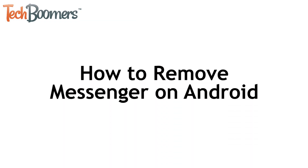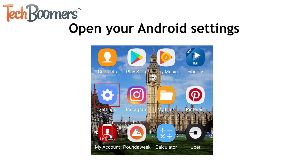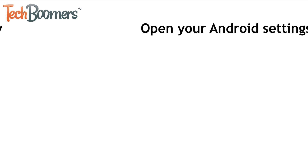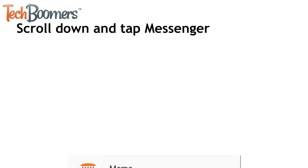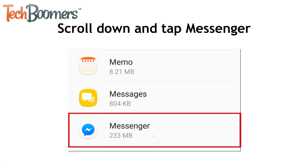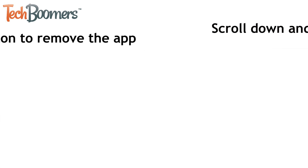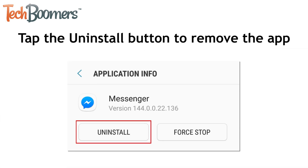Next, I'm going to show you how to remove Messenger from an Android device. Open the Settings app on your Android device. Then access the Apps category. This might be called Apps, Applications, or App Manager depending on the type of device you have. Once you get to your list of installed apps, scroll down and tap Messenger. On the next page, tap the Uninstall button to remove the app from your Android device.